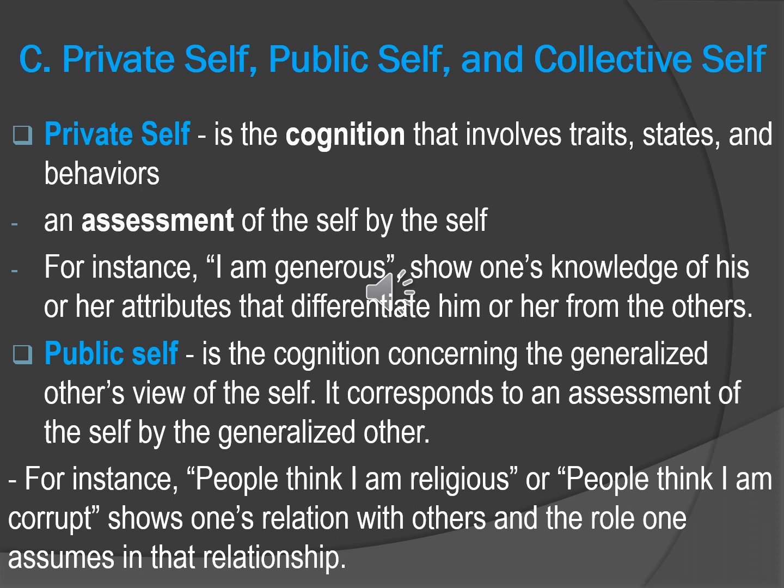Next is public self — the cognition concerning the generalized other's view of the self, corresponding to an assessment of the self by the generalized other. For example, 'People think I am religious,' or 'People think I am corrupt.' It shows one's relation with others and the role one assumes in that relationship. Public self is what others see — the generalized other's view of the self.